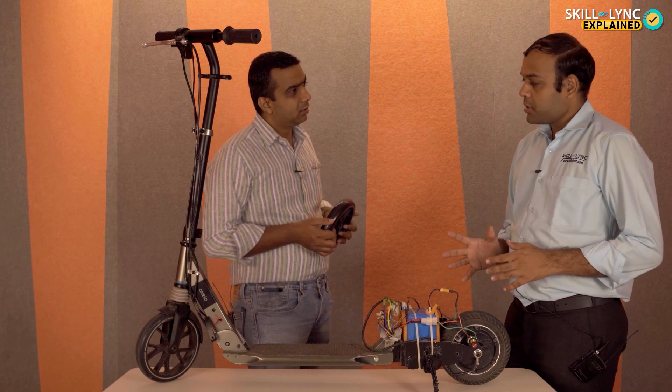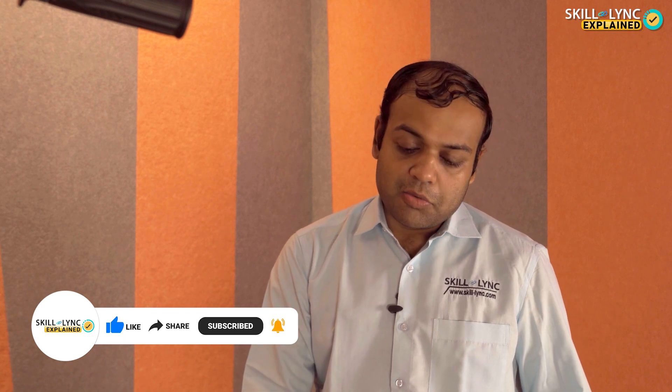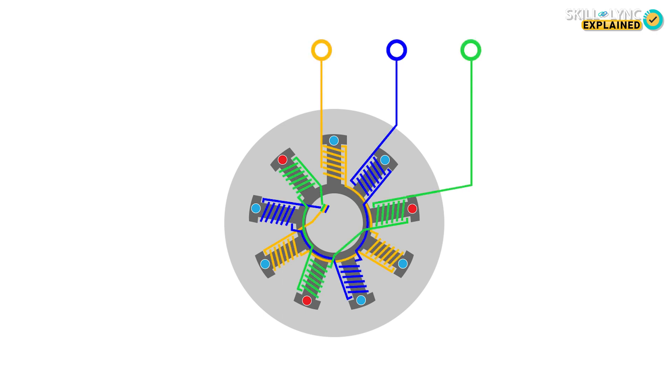So BLDC motor stands for brushless DC motor. Normally a DC motor will have a brush and commutator in order to provide electrical connection to the rotating winding and to feed the current to the motor winding which is rotating. Now instead of that, this particular brushless DC motor will have a winding which is on the stator side or it's steady and it will have a permanent magnet rotating on the outer periphery.